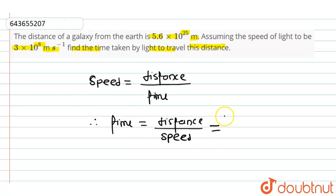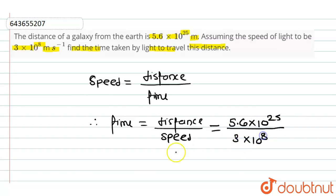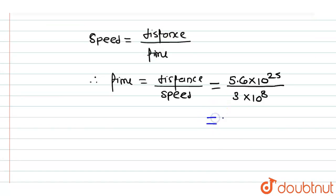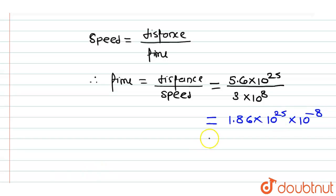So, the distance travelled by the galaxy from the earth is 5.6 into 10 raised to the power 25, divided by the value of speed of light, which is 3 into 10 raised to the power 8. So 5.6 divided by 3 will be equal to 1.86, and 10 raised to the power 25 into 10 raised to the power minus 8 gives 10 raised to the power 17. So it will be equal to 1.86 into 10 raised to the power 17 seconds. This will be the value of time required.